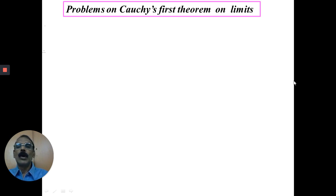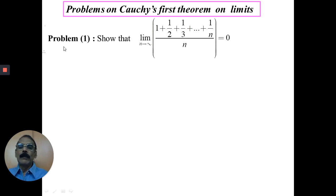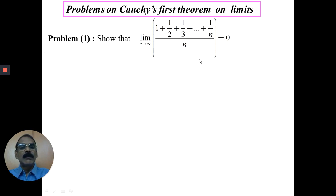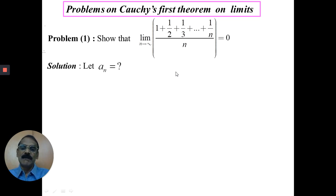Now we will discuss some problems on Cauchy's first theorem on limits. The first problem is: show that the limit of (1 + 1/2 + 1/3 + ... + 1/n)/n as n tends to infinity is 0. Here we can apply Cauchy's first theorem, because this is the arithmetic mean of the first n terms of the sequence 1/n. We need to choose a_n. How do we choose a_n?